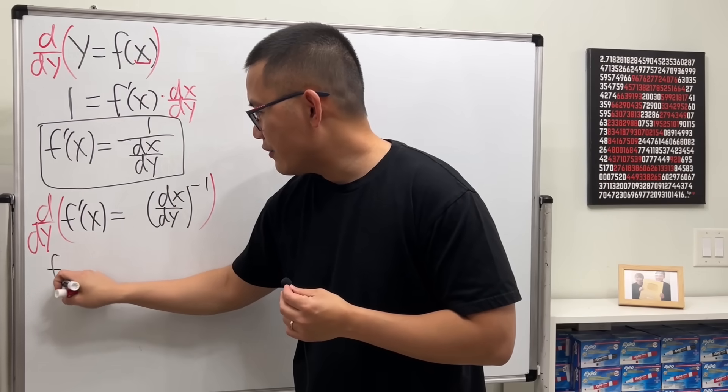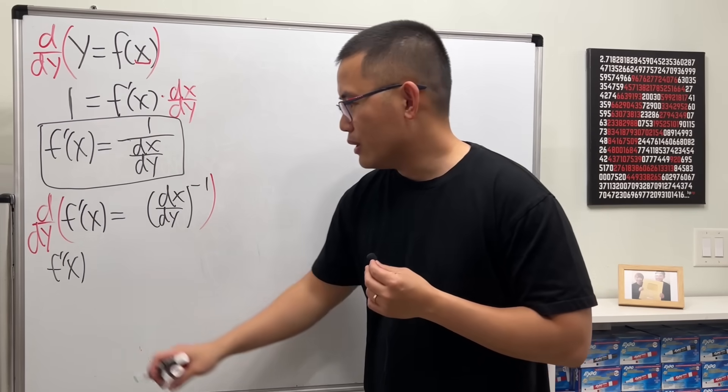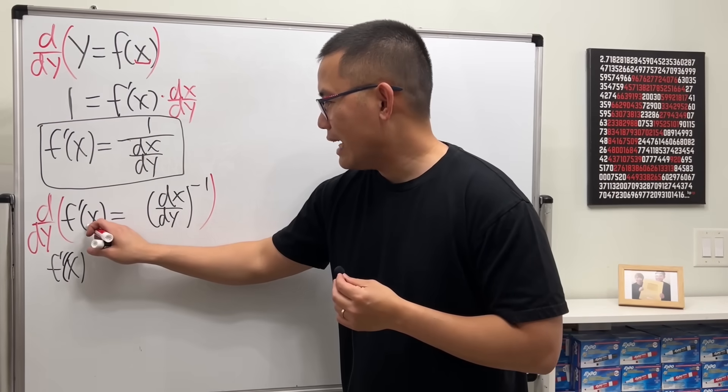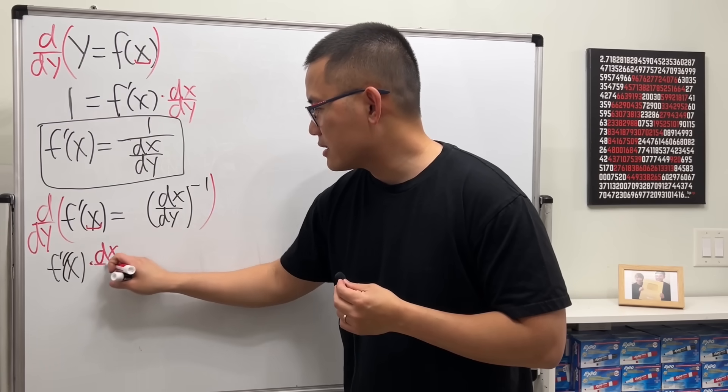On the left-hand side, we get f double prime of x. Are we done? No, because I need to close the parentheses. No, because we have to multiply by the derivative of x with respect to y, so here we need that dx/dy.